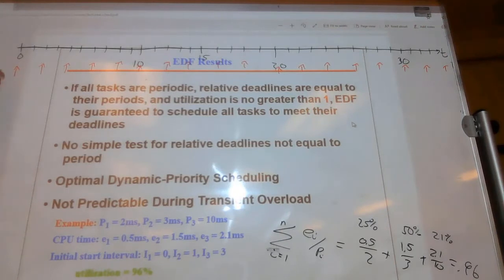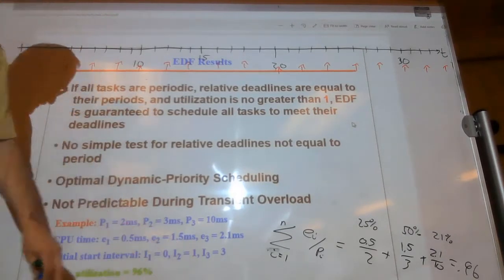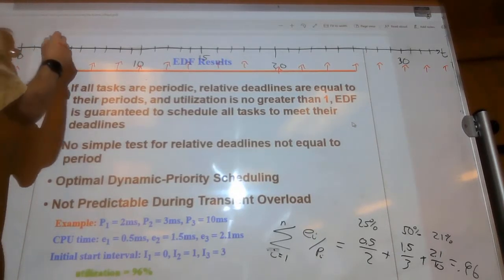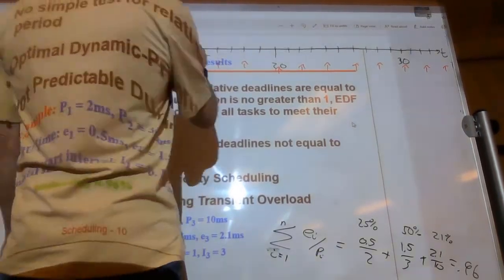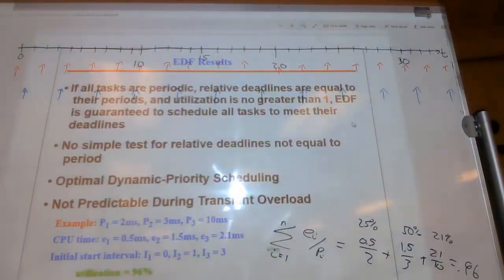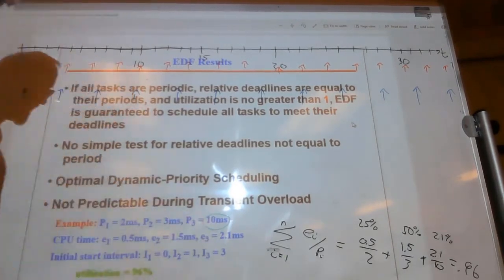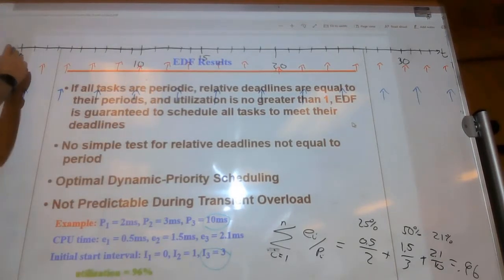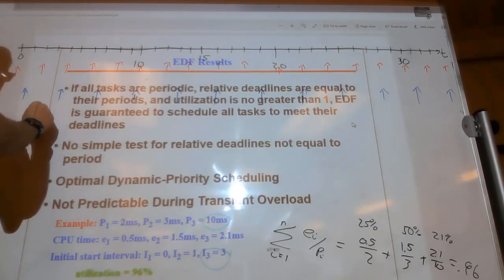In blue, task two runs every three milliseconds and starts at 1, so it fires at 1, then at 4, then at 7. Task three runs every 10 milliseconds and starts at i equals 3, so the first instantiation fires at time 3.